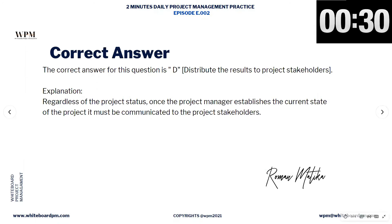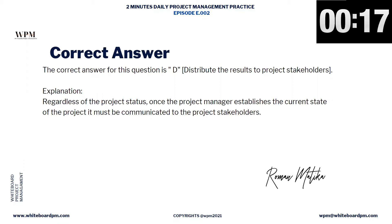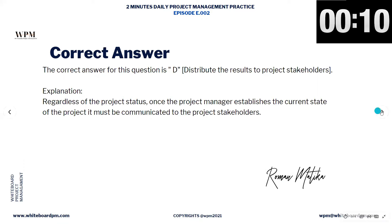Regardless of the project status, once the project manager establishes the correct state of the project, it must be communicated to the project stakeholders. The project manager must always communicate to the stakeholders of the project. The correct status must be reported all the way.